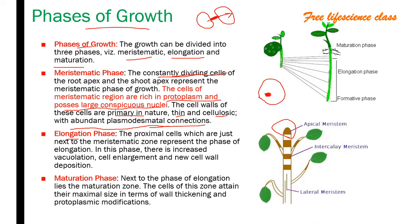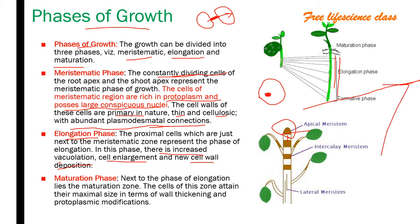The elongation phase involves an increase in length. The proximal cells just next to the meristematic zone represent the phase of elongation. In this phase there is increased vacuolation, cell enlargement, and new cell wall deposition, so that the plant can increase in length.